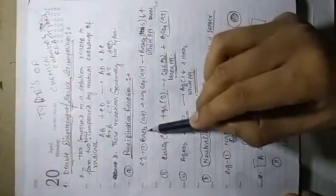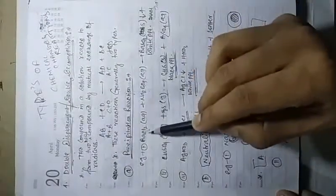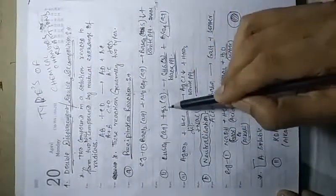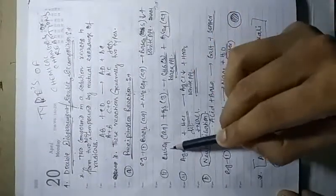Double displacement takes place in each and every case here. Sulfate comes here, chlorine goes there — double displacement happens. Cl comes here, NO₃ goes there. So precipitation reactions are all double displacement reactions.